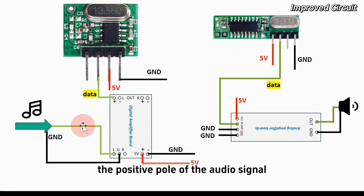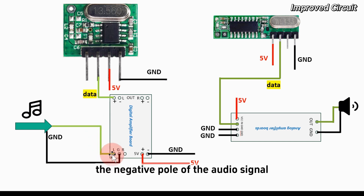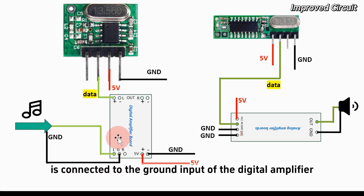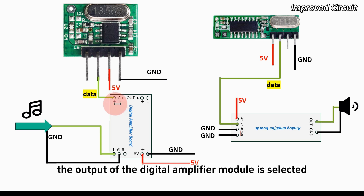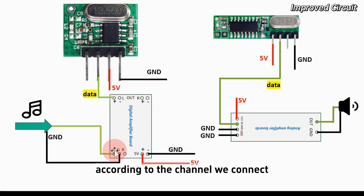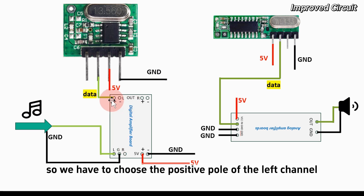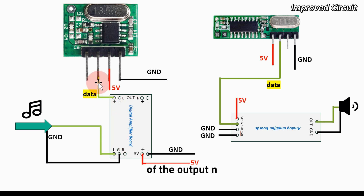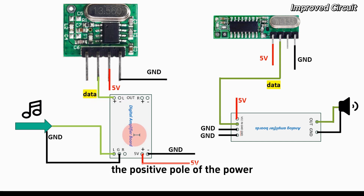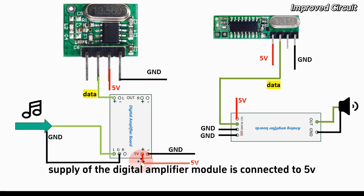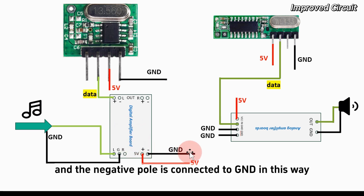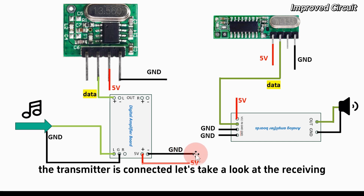The positive pole of the audio signal is connected to the left channel input of the digital amplifier, and the negative pole is connected to the ground input. The output of the digital amplifier module is selected by channel — we choose the positive pole of the left channel output to connect to the data pin of the transmitter module. The power supply positive pole of the digital amplifier module is connected to 5V and the negative pole to GND.